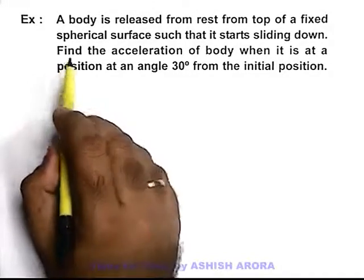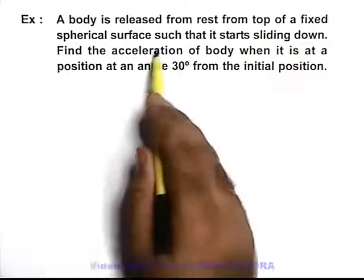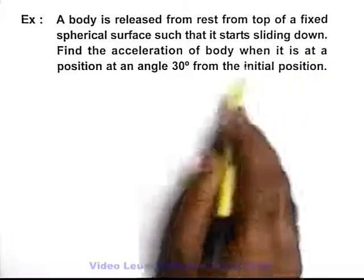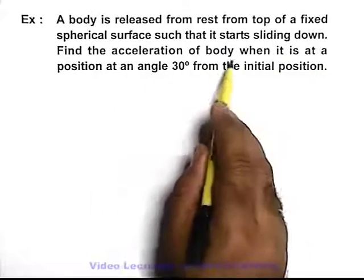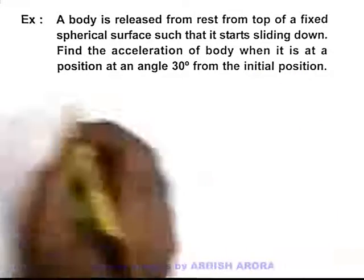In this example, we are given that a body is released from rest from the top of a fixed spherical surface such that it starts sliding down. We are required to find the acceleration of the body when it is at a position at an angle 30 degrees from the initial position.